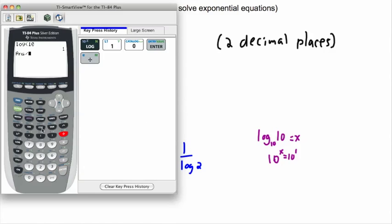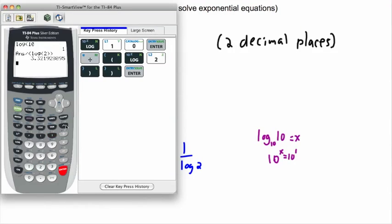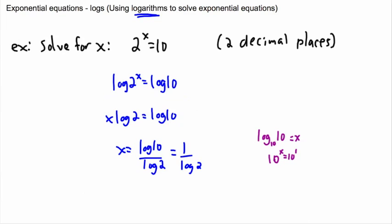Take that and divide that by log of 2. I put brackets just to be absolutely sure I don't make any mistakes. And that gives me 3.32 if I wanted two decimal places. So 3.32. So x equals approximately 3.32. It's not exactly right. I've rounded it. But that's what they wanted me to do. That's what they asked for.